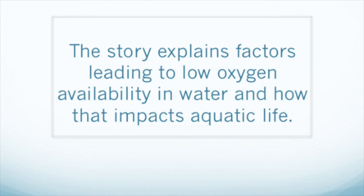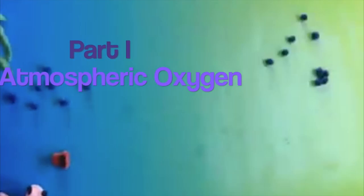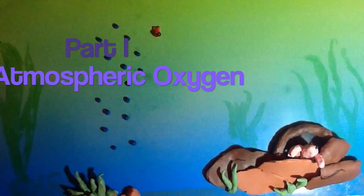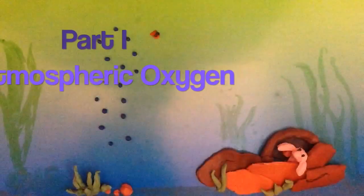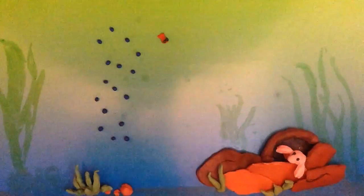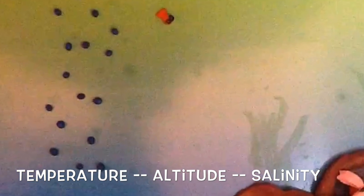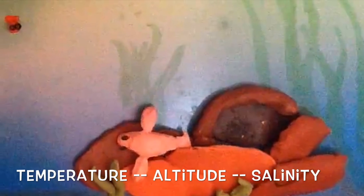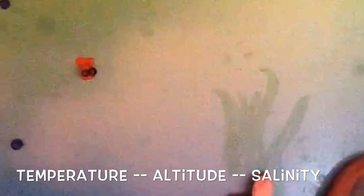We began our story in part one talking about the various factors that allow oxygen to dissolve into water from the atmosphere. Those include temperature and altitude, because it affects the atmospheric pressure, and finally salinity. Now let's talk about photosynthesis.